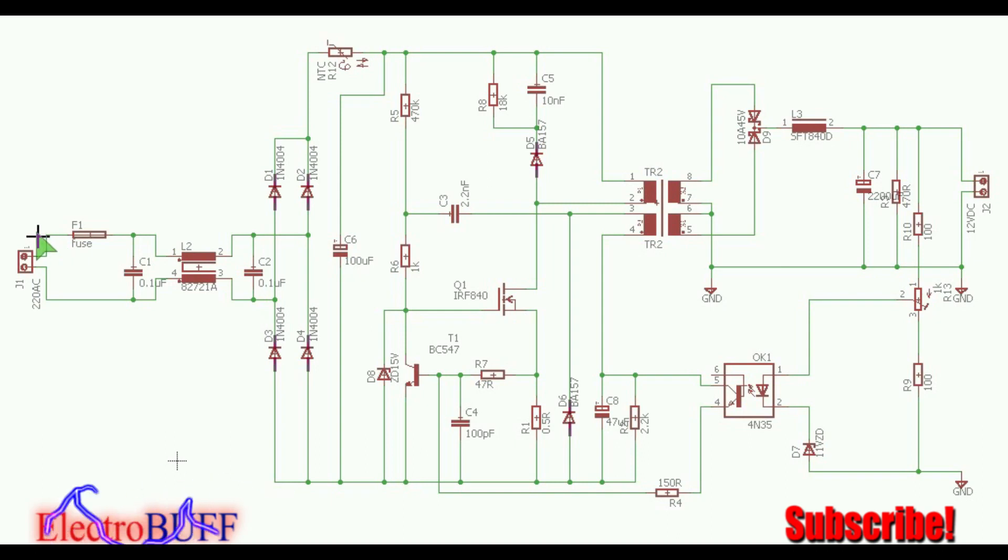Then there's this filter section made up of this capacitor, this common mode differential inductor, and this capacitor. What this does is eliminate the high frequency noise from interfering with the mains or any other appliances connected to the mains. Then after this you have a full bridge rectifier.